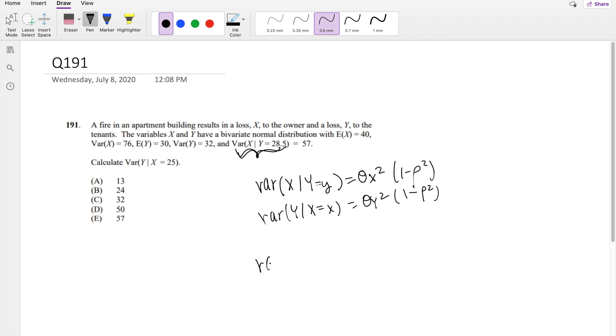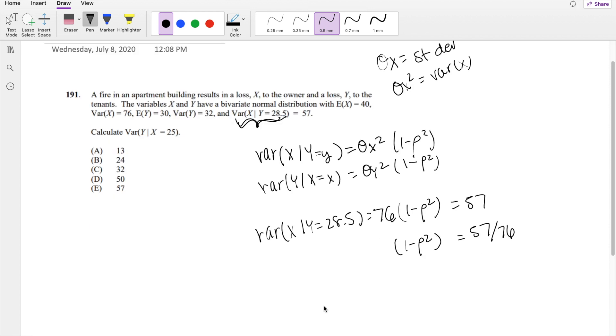So if we know this information here, we can plug it in. If variance of x given y is equal to 28.5, this is equal to, we know theta x squared is the same thing, if theta x is just standard deviation, then we know theta x squared is the variance of x, so it's saying variance of x which we know to be 76 times 1 minus rho squared is equal to 57. Then we know that 1 minus rho squared is equal to 57 divided by 76.